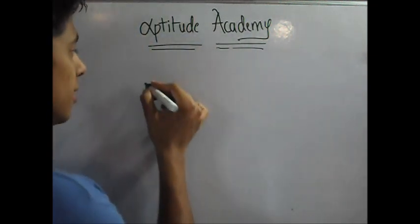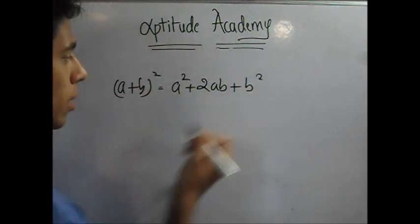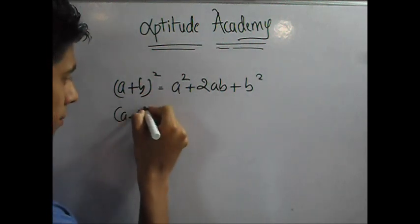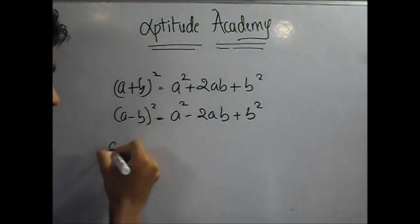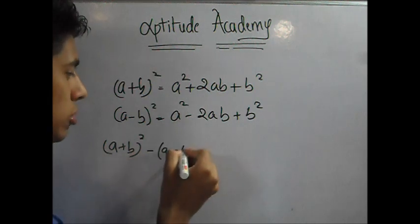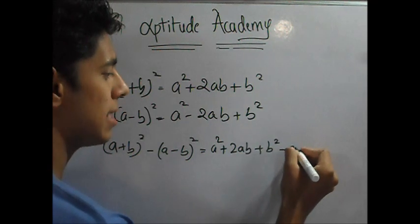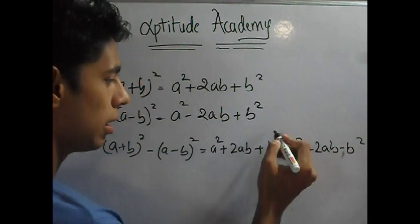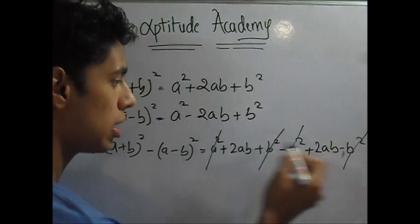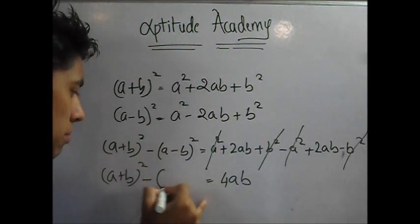The next problem is a very important problem and very popular in most examinations. But before that, let's see this. What is (a plus b) whole squared? This is a squared plus 2ab plus b squared. What is (a minus b) squared? This is a squared minus 2ab plus b squared. Now, what if you take (a plus b) whole square minus (a minus b) whole square? It gives you a squared plus 2ab plus b squared minus a squared plus 2ab minus b squared. B squared and b squared cancel, a squared and a squared cancel, leaving 2ab plus 2ab. So this is 4ab. This is a very important rule that is used in many problems.